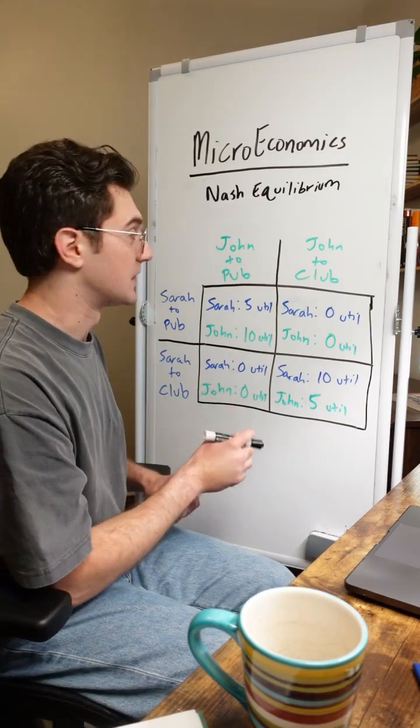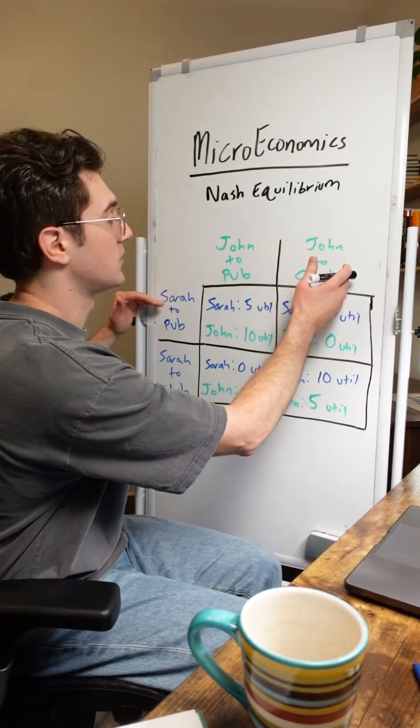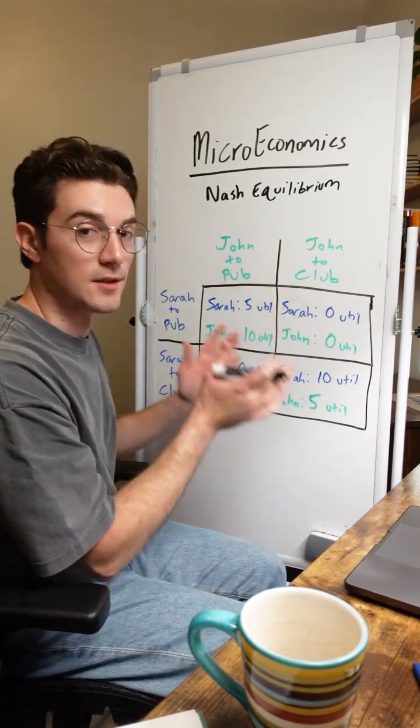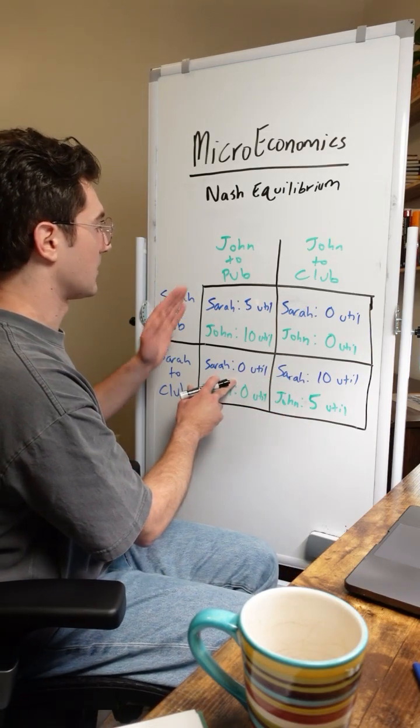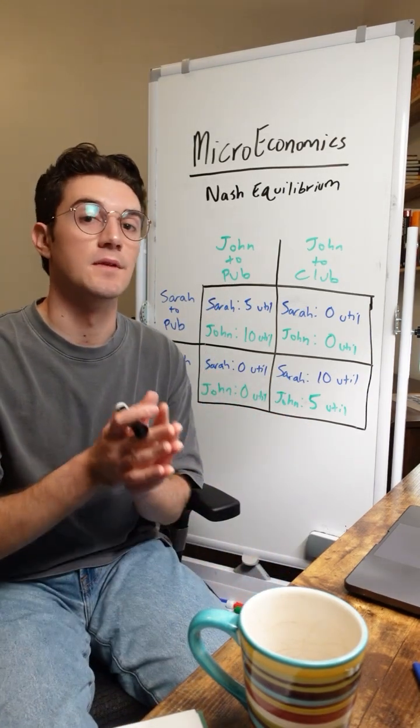What to take note of here is that if both parties don't do the same action, like if Sarah goes to the pub and John goes to the club, they both achieve zero utility. Same if the inverse happens - if John goes to the pub and Sarah to the club, they're both unhappy and both achieve nothing.